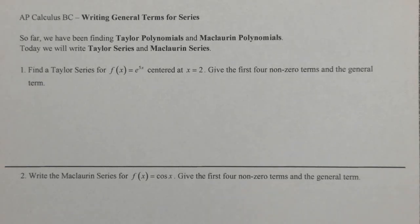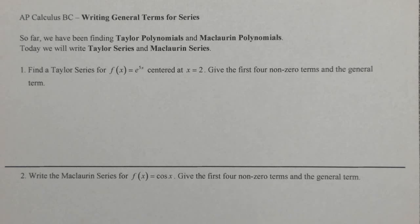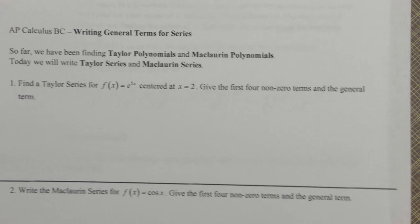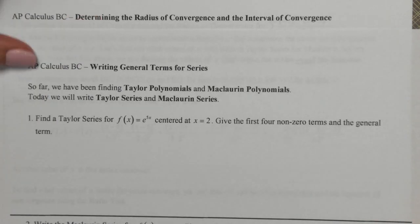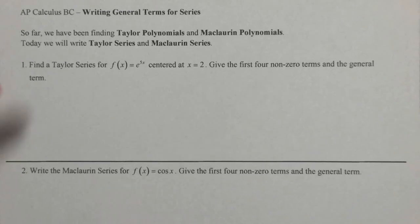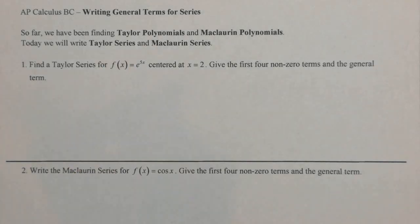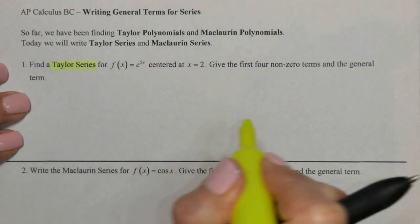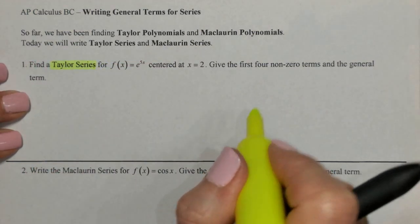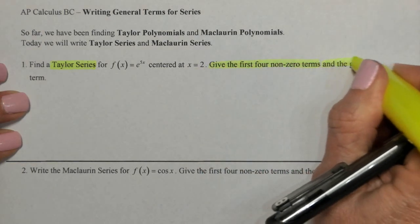So far we have been finding Taylor polynomials and Maclaurin polynomials. Today we're going to focus on series, writing general terms for series. I usually combine this with the next lesson and do it on the same day, so we're also going to be determining the radius of convergence and the interval of convergence. Let's dive in — we're going to find a Taylor series for a function centered at x equals 2, giving the first four nonzero terms and the general term.